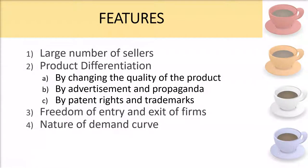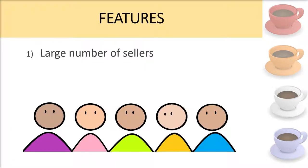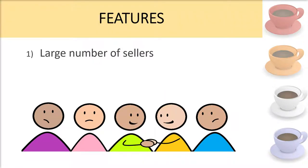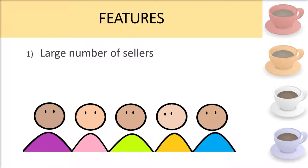Let's look at the features of monopolistic competition. The first feature is that there are a large number of sellers. Since there are a large number of sellers, no single seller can control the market or control the outcomes by changing their price or output. There is also no interdependence between sellers regarding pricing and output decisions, and each seller pursues an independent course of action.